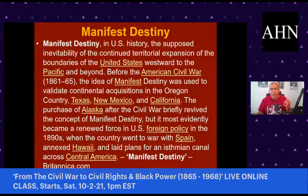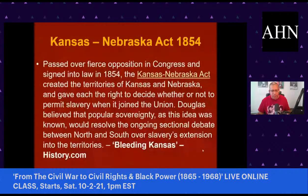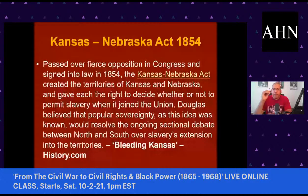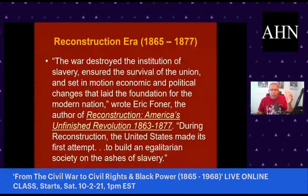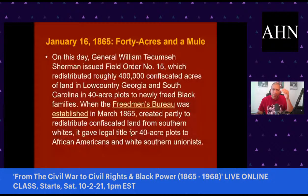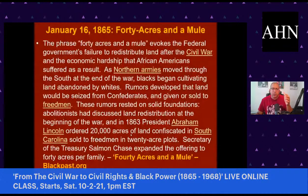Following the Kansas-Nebraska Act, there was also what's called Bleeding Kansas — armed conflict between pro-slavery and anti-slavery groups in the Kansas Territory from about 1855 to 1859, with around 55 people killed. We take you through history chronologically, looking at events leading up to the Civil War, because students come to the class with different levels of historical understanding.